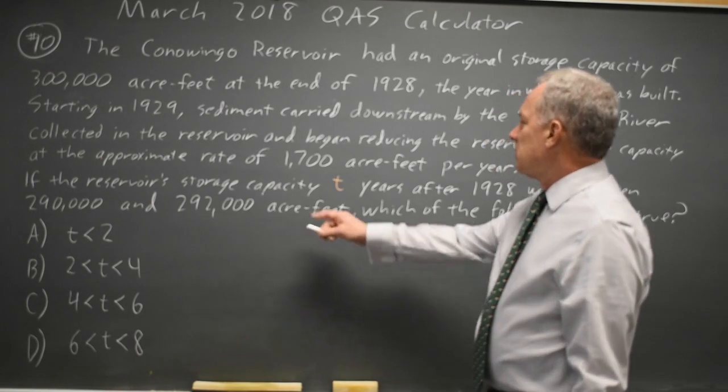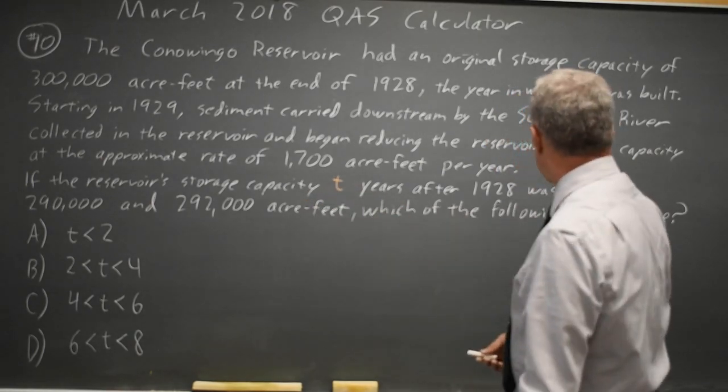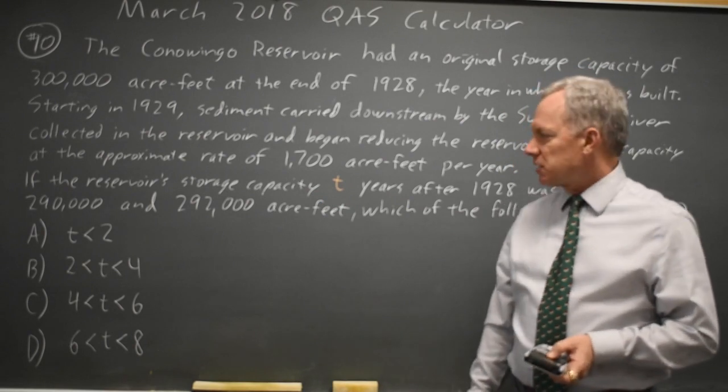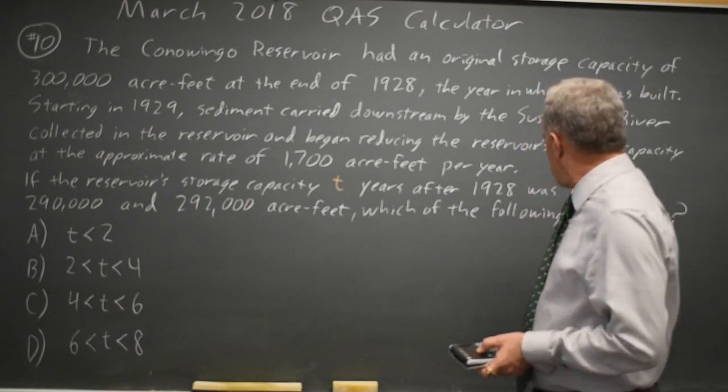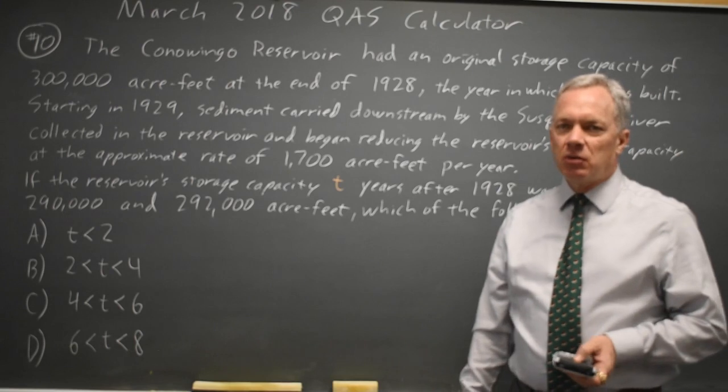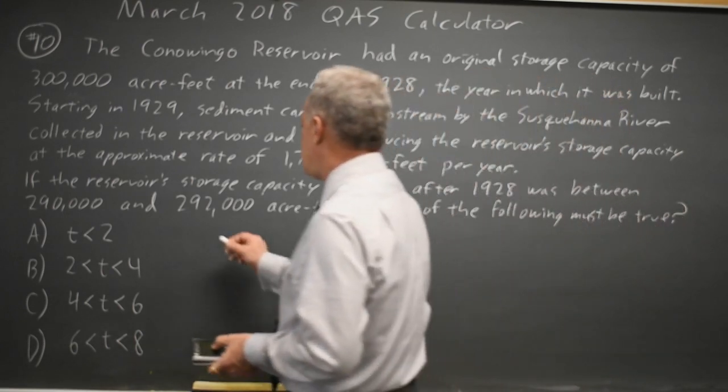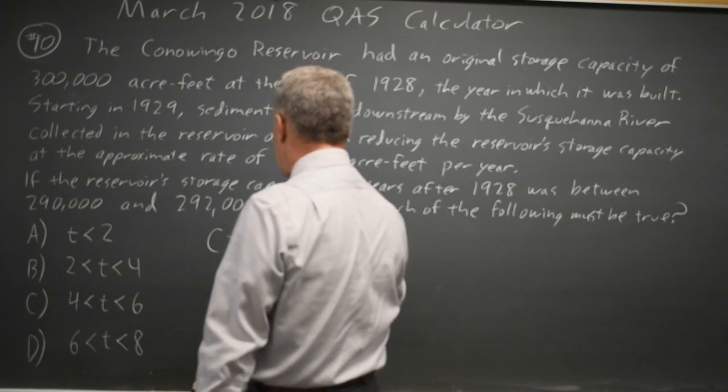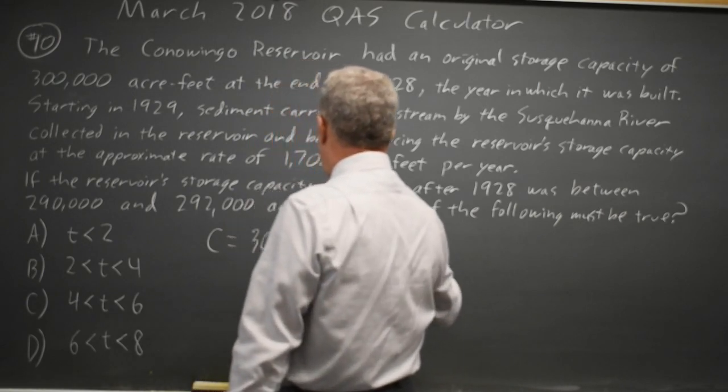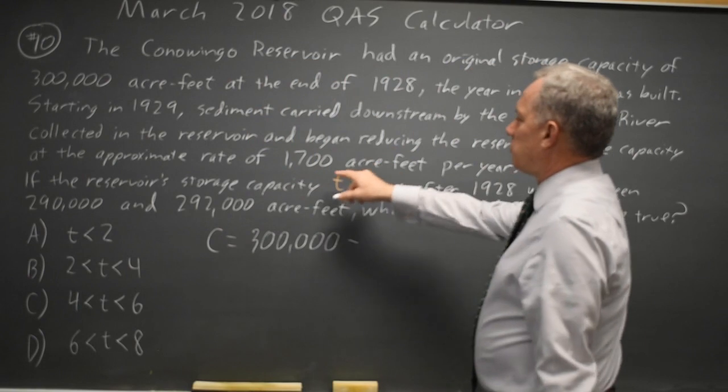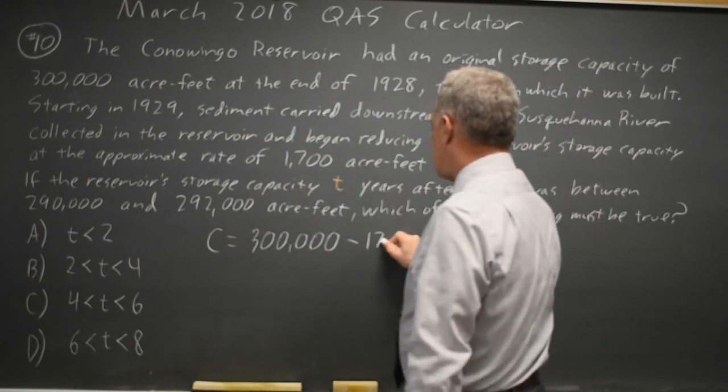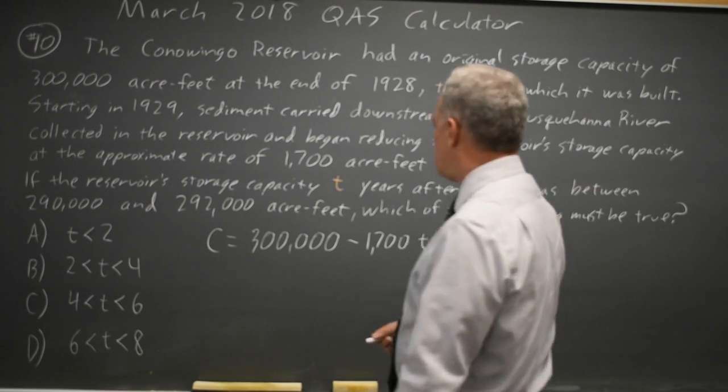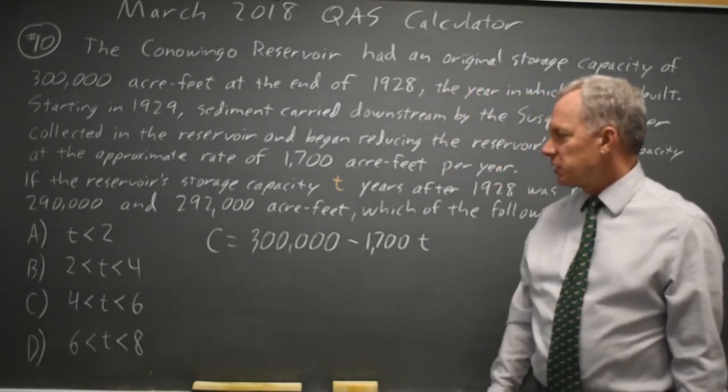But in this case they're asking if the reservoir's storage capacity two years after 1928 was between 290,000 and 292,000 acre-feet, which of the following must be true, where the storage capacity C is the initial capacity 300,000, and then it's reduced by 1,700 acre-feet per year, so minus 1,700T, where T is years since 1928.